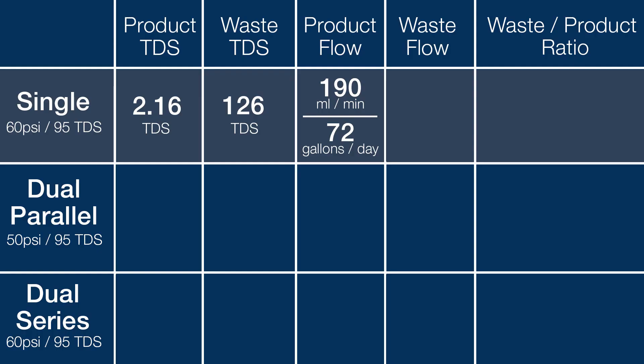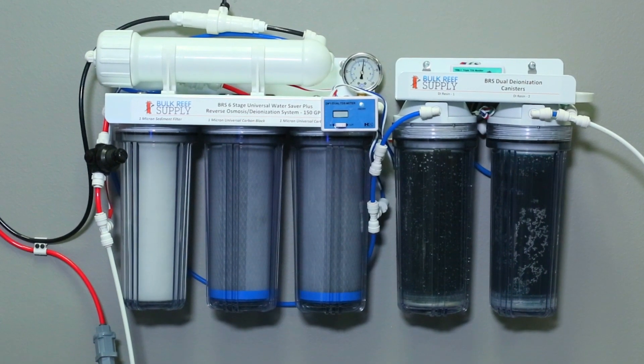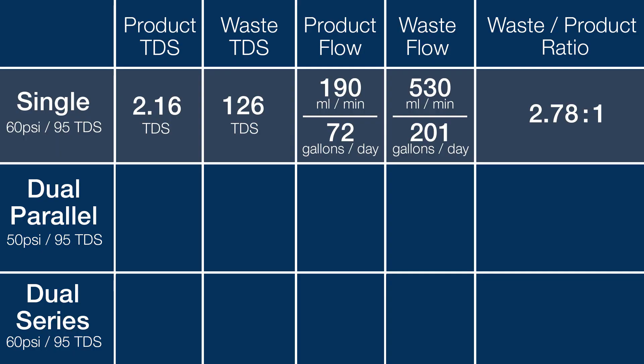It will obviously vary to some degree based on pressure. The waste water or concentrate flow was measured at 530 milliliters a minute, pretty close, which is around 201 gallons a day of waste water produced. End of the day, this is pretty close to how you would expect a reef system like this to run. The rejection, resulting water quality, flow rates, and waste to product water ratios all pretty spot on.